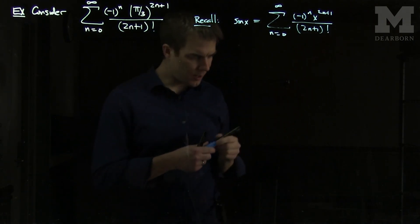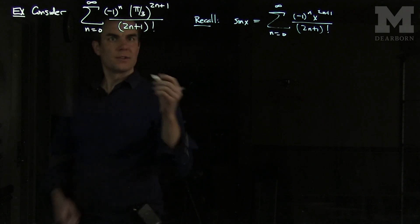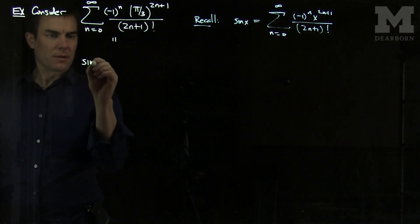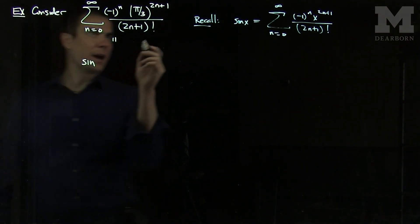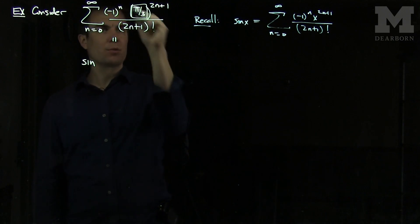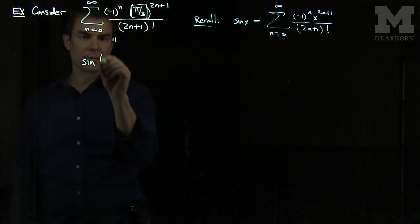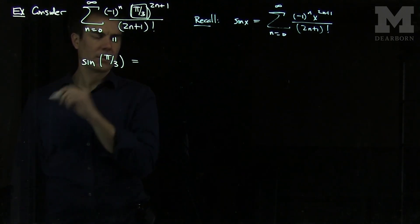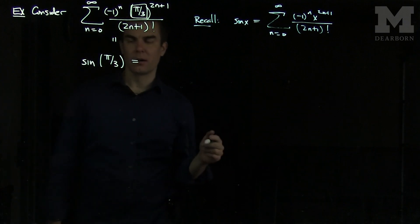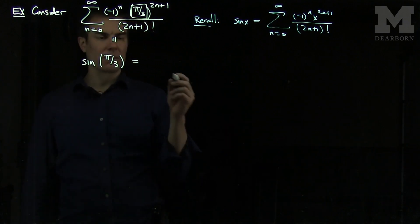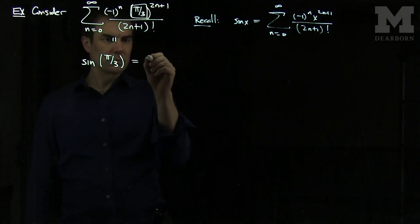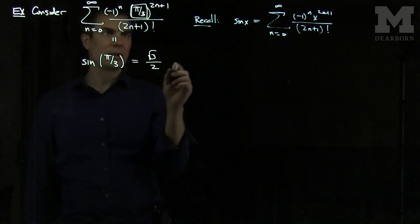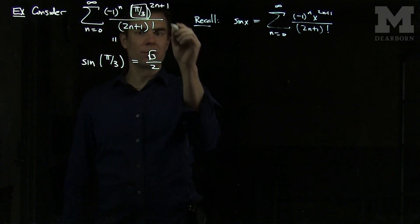So our series over here is exactly equal to the sine of x where x has been replaced with pi over 3. We know that the sine of pi over 3 is root 3 over 2, and so this series converges to root 3 over 2.